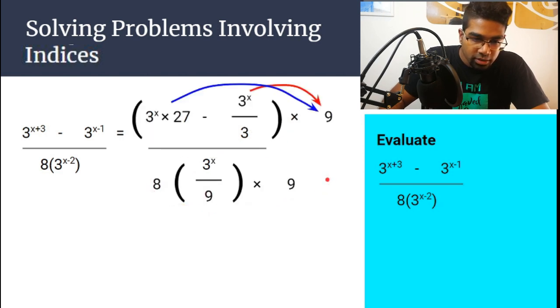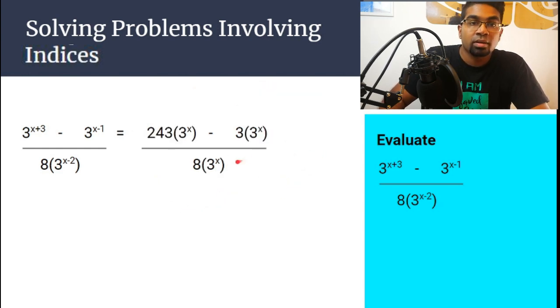And then for the denominator, we have 9 and 9, we can simplify. We can eliminate the 9. So we get 8, 3x here. Now once we reach this, you can look at 3x as any other variable.